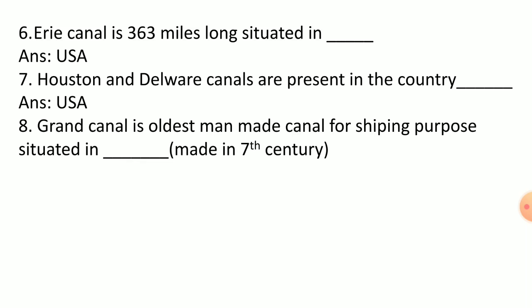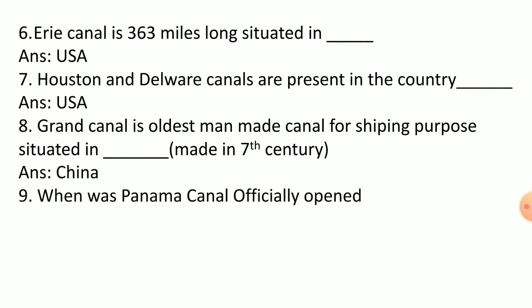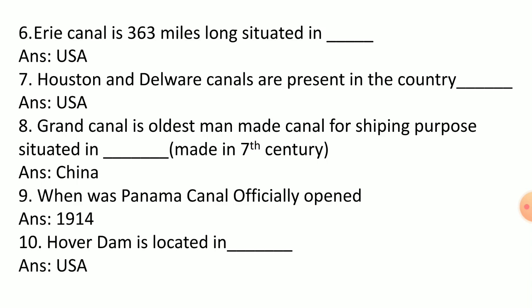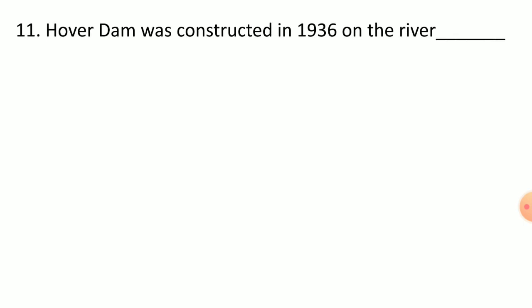The Grand Canal is the oldest man-made canal for shipping purposes, situated in China. It was made in the seventh century. The Panama Canal was officially opened in 1914. The Hoover Dam is located in the USA and was constructed in 1936 on the Colorado River.